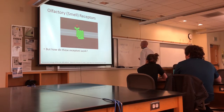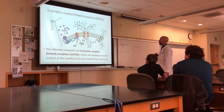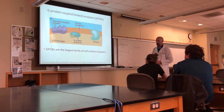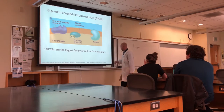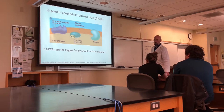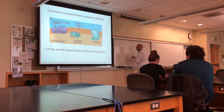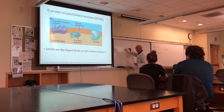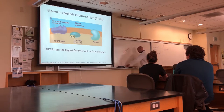But how do these receptors work? It turns out they are a type of receptor called a G-protein-coupled receptor, or GPCR, displayed on the surface of these modified cilia that extend from each cell. GPCRs are the largest family of cell surface receptors. As you can see in the picture here, GPCRs are embedded in the plasma membrane. We have the outside of the cell, the inside of the cell, and the GPCR has a binding site for a ligand on the outside of the cell.